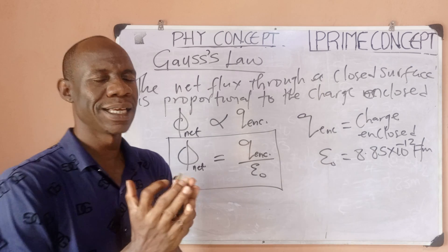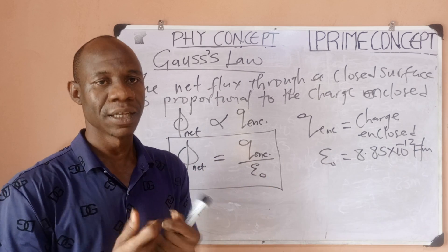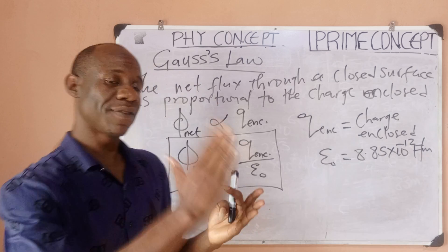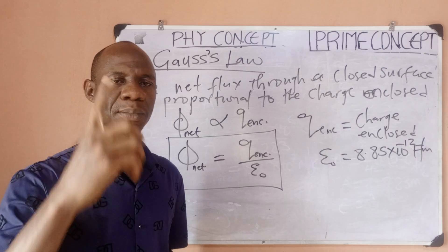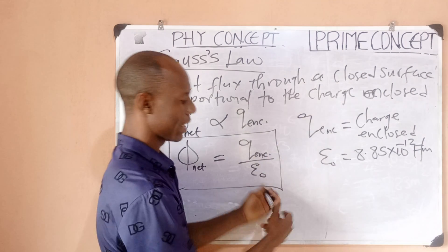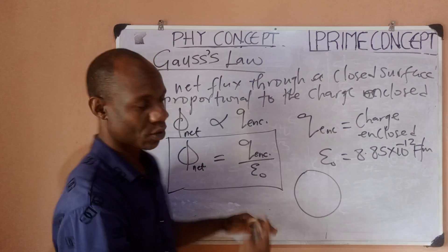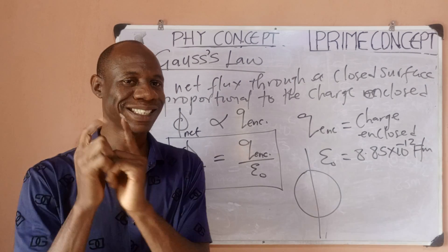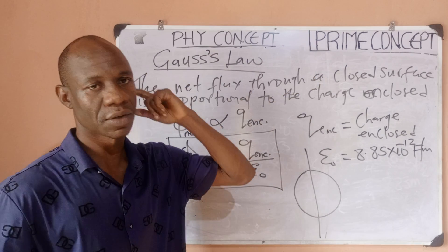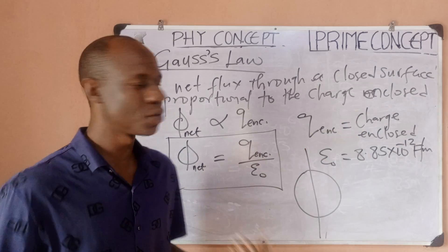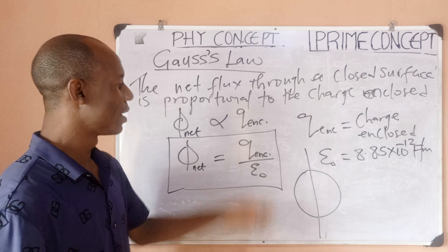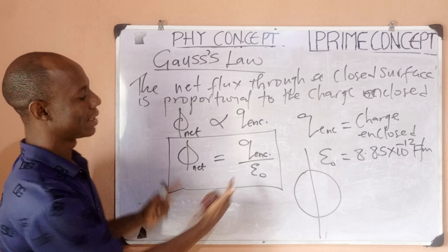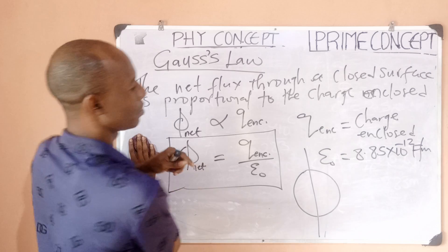One important thing to know about Gauss's Law is that it is applied to surfaces that have symmetry — symmetric surfaces. When you divide that surface into two, whatever you have on one side you get on the other. An example of a symmetric surface is a spherical surface. A cylinder is also a symmetrical surface, and so are cones and many others. Now I'll quickly show how we can verify this formula.